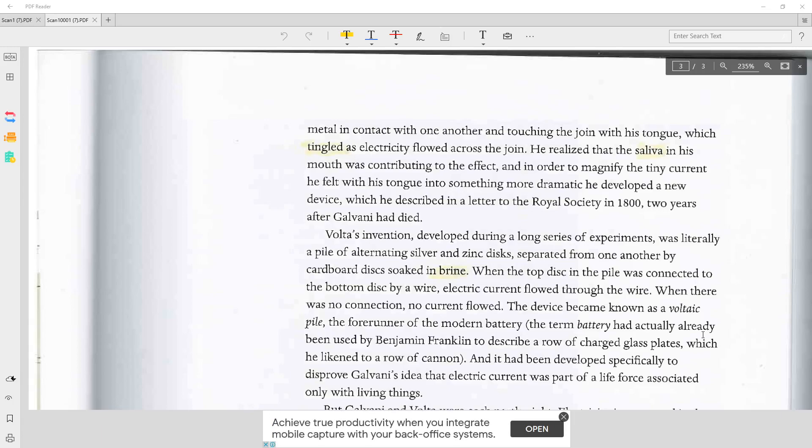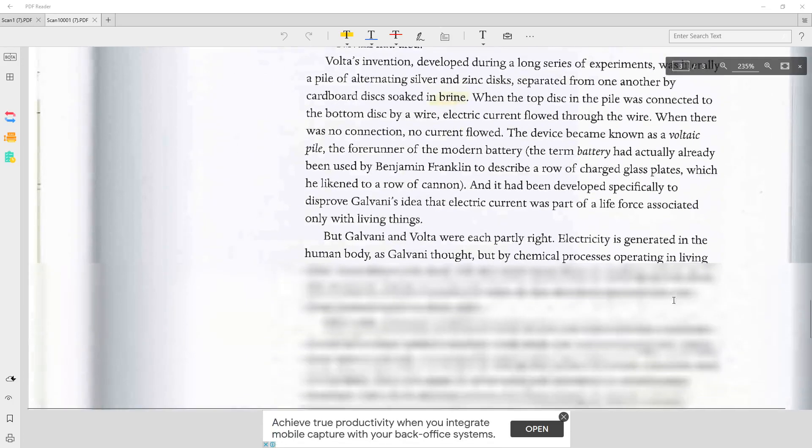The forerunner of the modern battery. The term battery had actually already been used by Benjamin Franklin to describe a row of charged glass blades, which he likened to a row of cannon. And it had been developed specifically to disprove Galvani's idea that electric current was part of a life force associated only with living things.